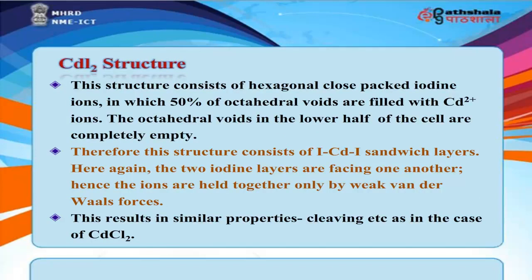The CdI₂ structure consists of hexagonal close-packed iodine ions, in which 50% of octahedral voids are filled with Cd²⁺ ions. The octahedral voids in the lower half of the cell are completely empty, so the structure consists of I-Cd-I sandwich layers. Here again, the two iodine layers face one another and are held together only by weak van der Waals forces, resulting in easy cleaving similar to that of CDCl₂.